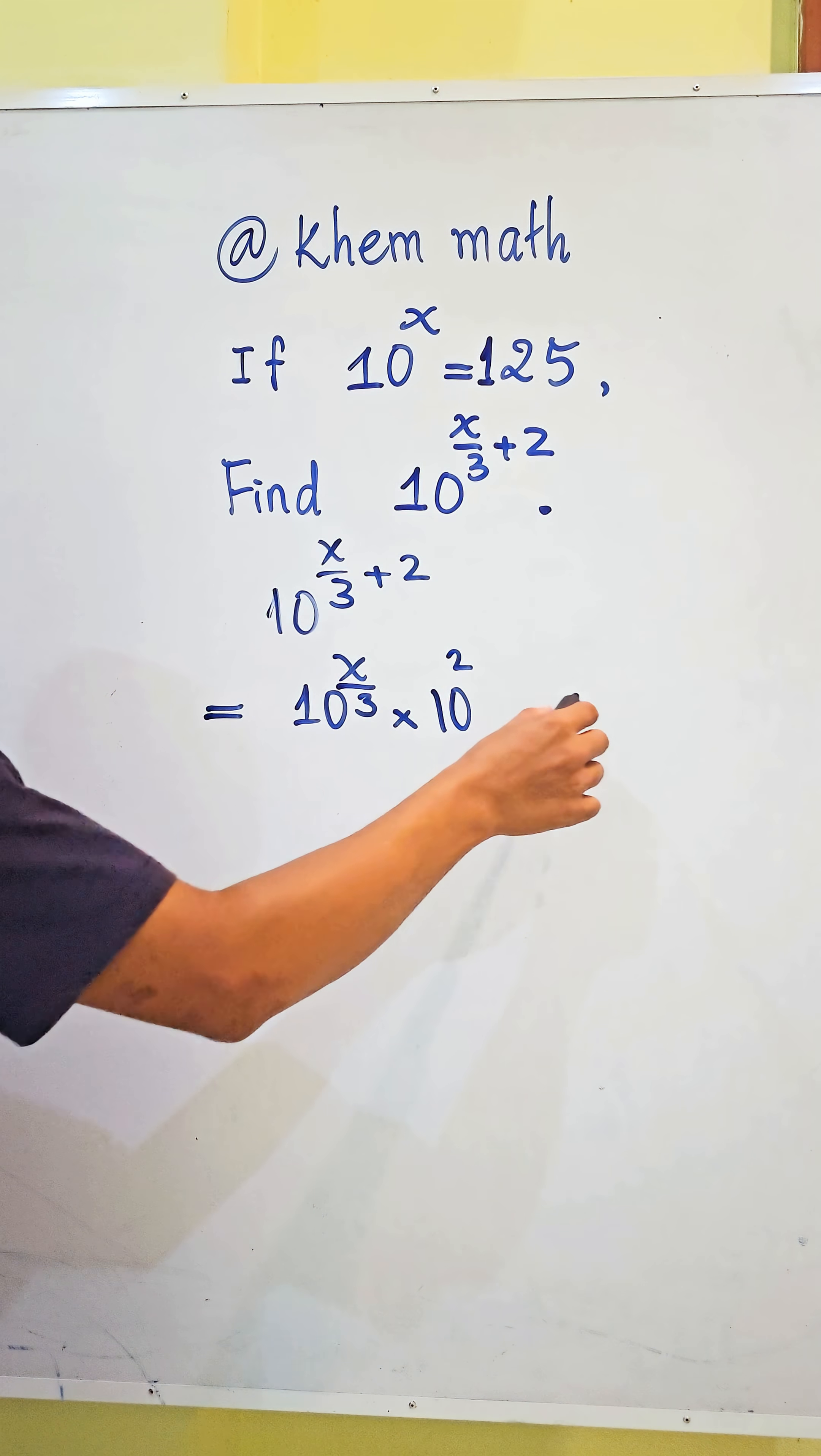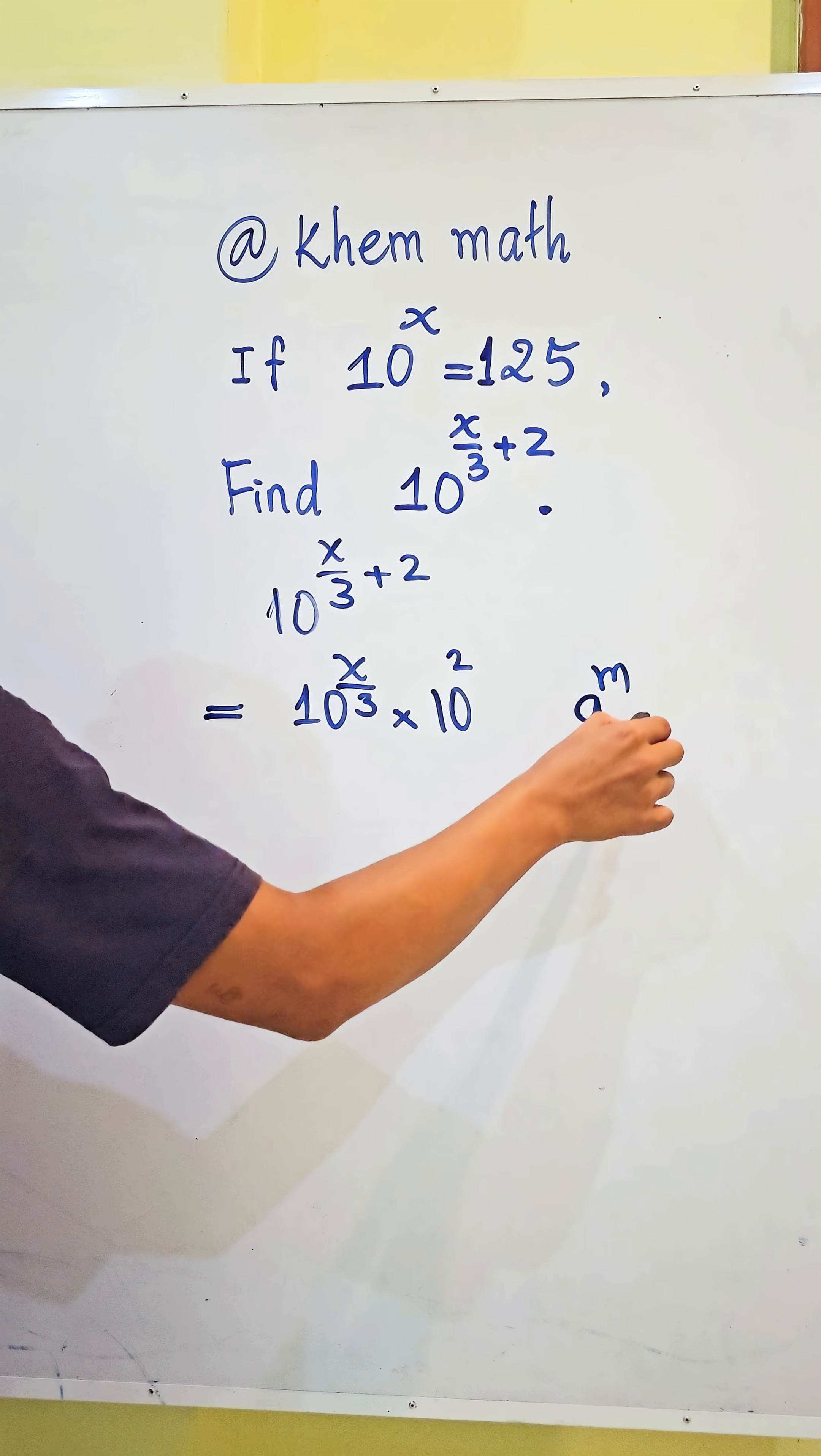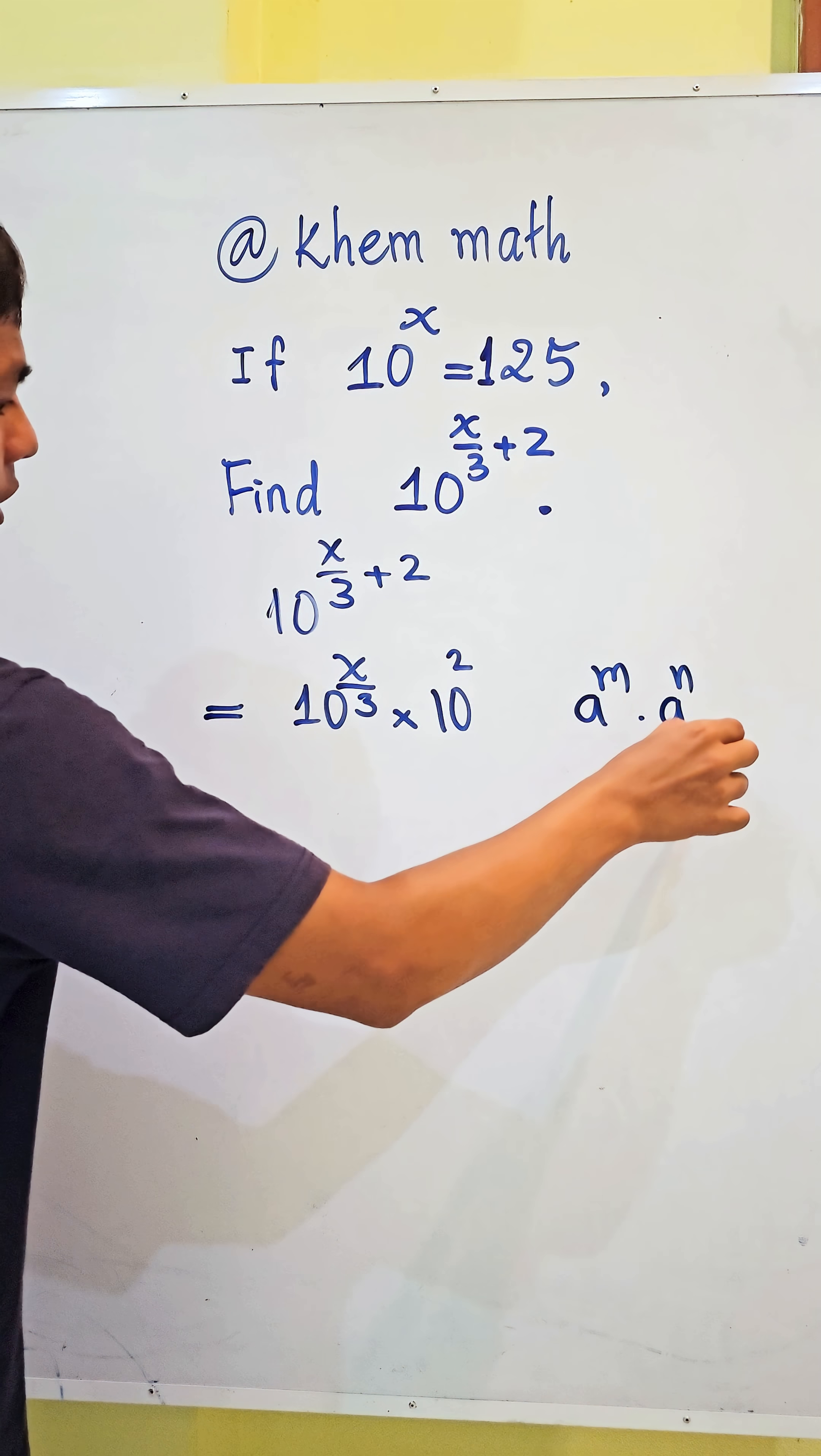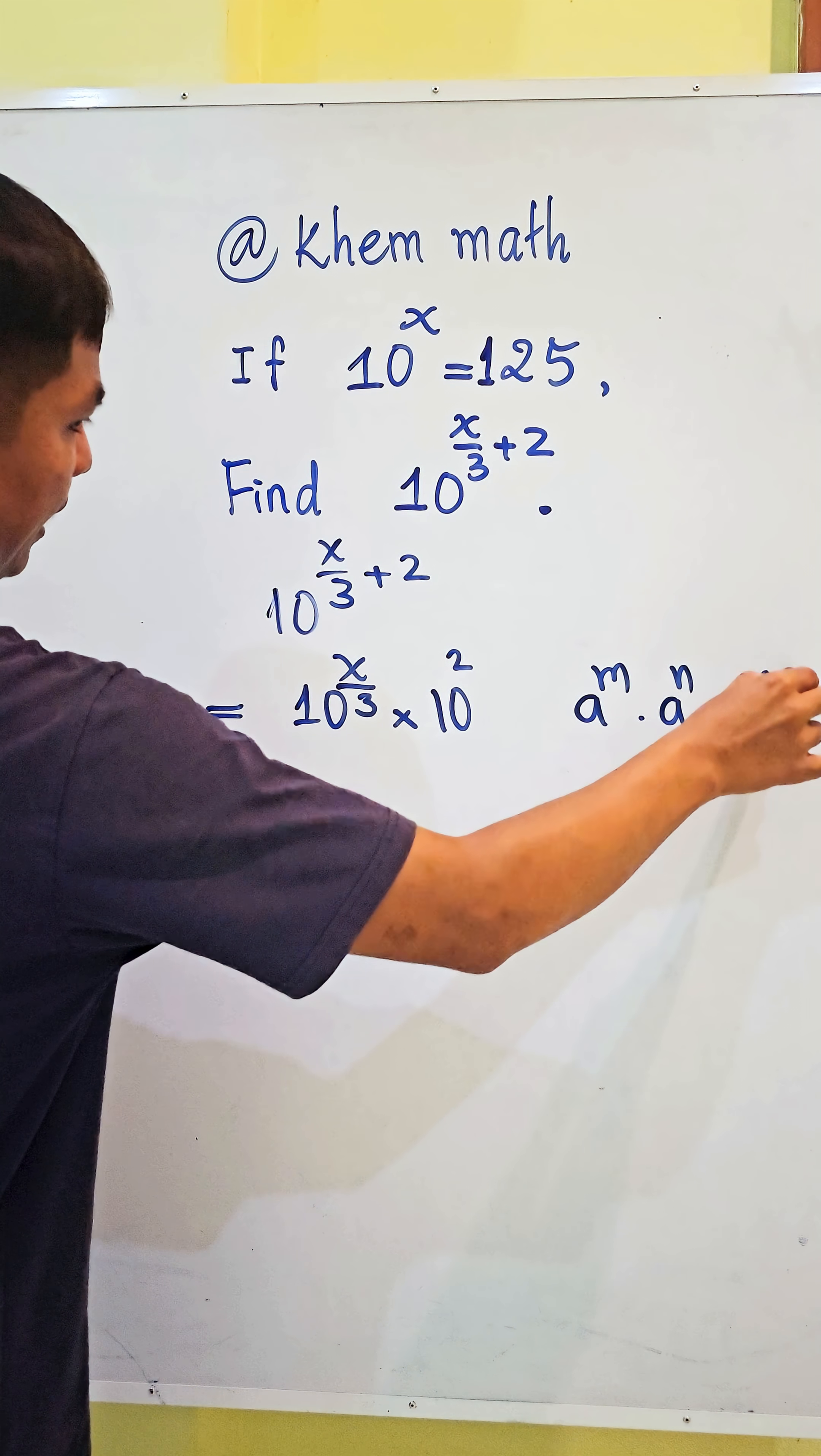Here we use the formula: a power m times a power n equals a power m plus n.